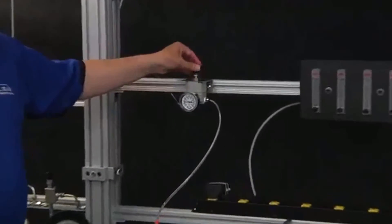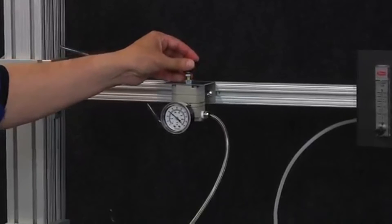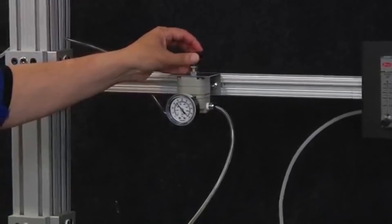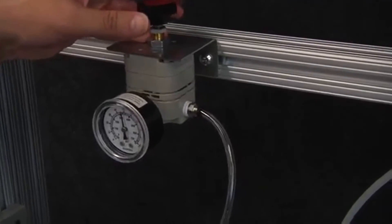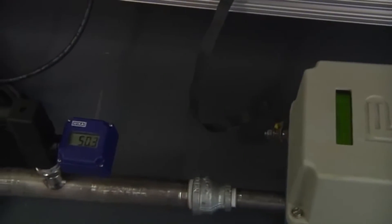Where we'll start is I'm going to run the pressure on the Equilibar up to 50 psi. And at 50 psi, we're going to see that we're controlling at 4 gallons per minute of flow.